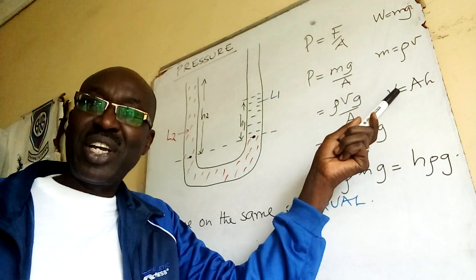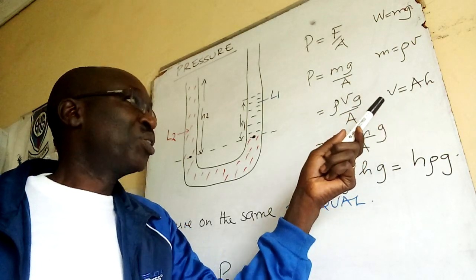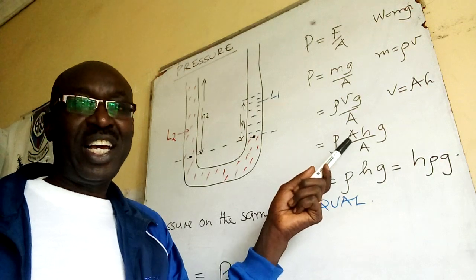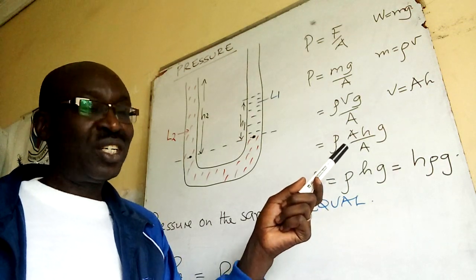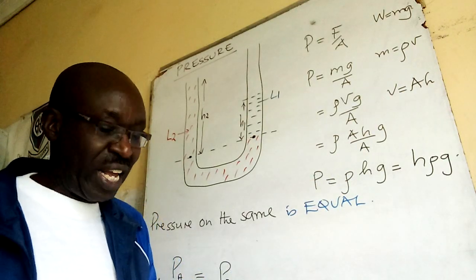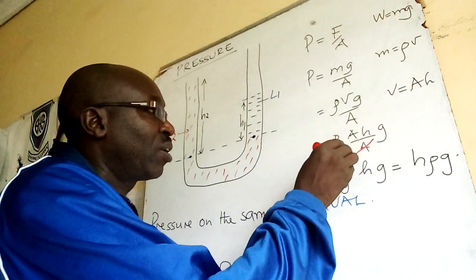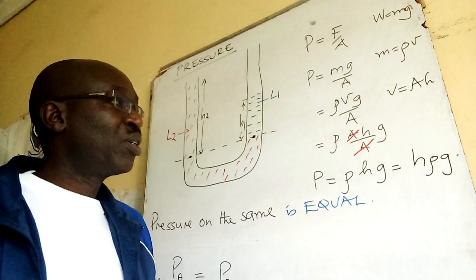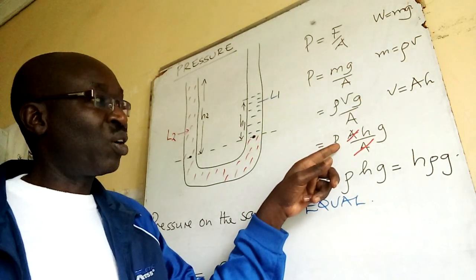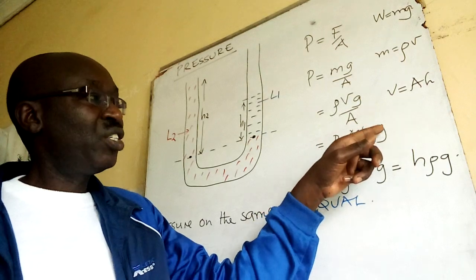Volume is cross section area times height. So remove V, we put AH. So ρ AHG divided by A. A and A cancel there.